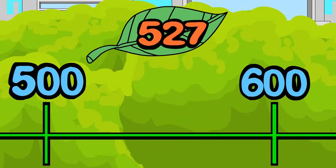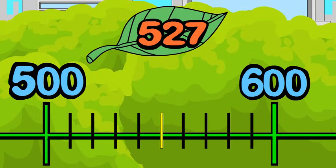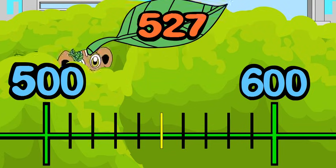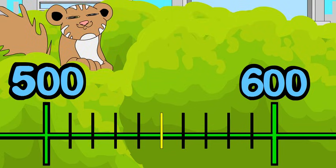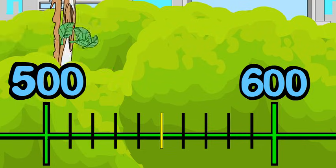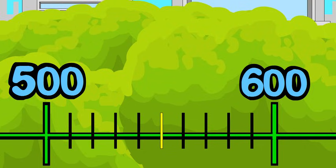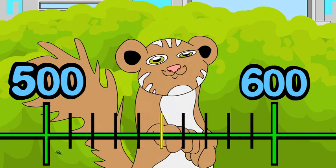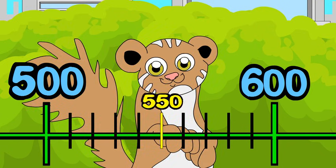Now you can set up a number line and mark your benchmarks. Step two: find the midpoint between five hundred and six hundred — that's the number that is exactly in the middle. The midpoint is 550.